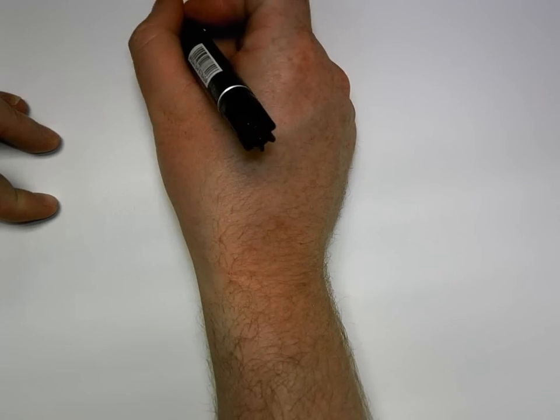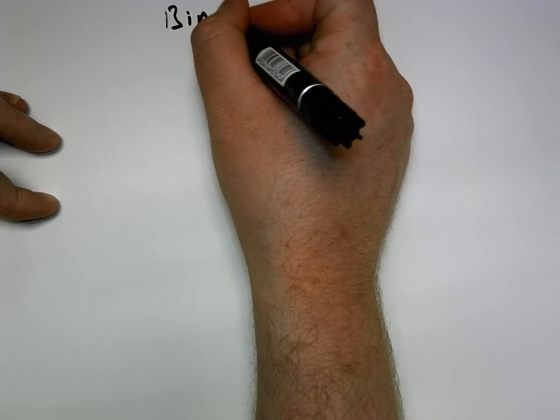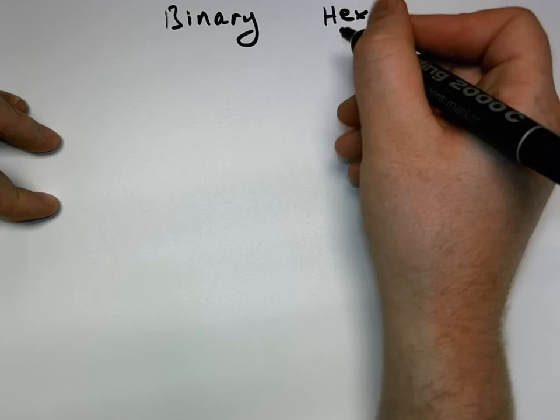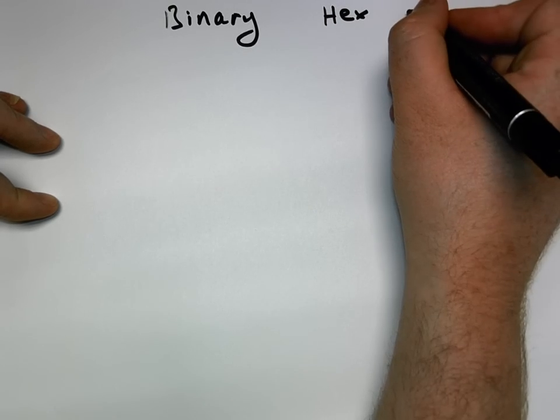Hello again class. So what we'll do is we'll continue on with the last example. Remember we were dealing with binary and we were looking at hexadecimal and also looking at the octal number systems.